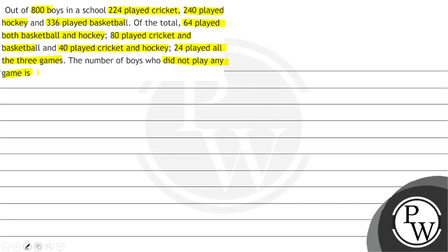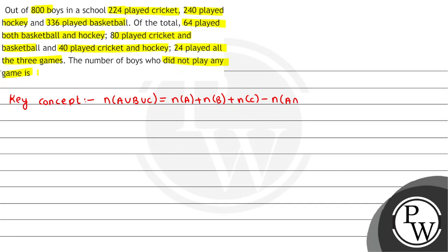First let's understand the key concept. The number of elements in A union B union C is given by the formula: n(A) + n(B) + n(C) minus n(A∩B) minus n(B∩C) minus n(A∩C) plus n(A∩B∩C).